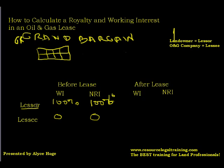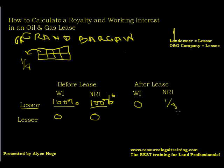So the lessor says, oil and gas company, I will give you 100% of my working interest in exchange for a royalty fraction. In this case we'll use the example of one-eighth. After the lease, the lessor is going to own 0% of the working interest, and they're going to own a one-eighth net revenue interest. So they're entitled to a one-eighth royalty.